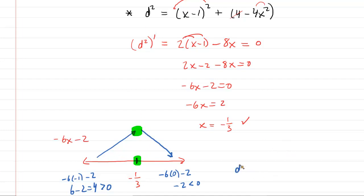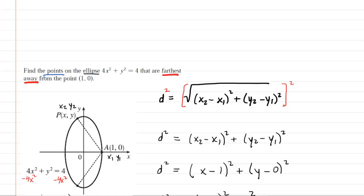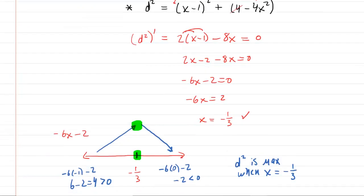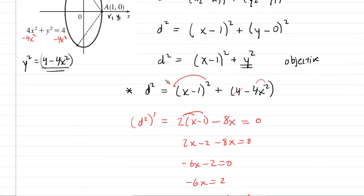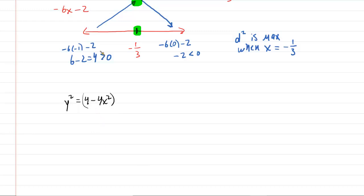We know d squared is maximized when x equals negative one-third. But we need to find the y coordinate as well to fully answer the question. Going back to the equation y squared equals 4 minus 4x squared, we plug in negative one-third for x: y squared equals 4 minus 4 times (negative one-third) squared.